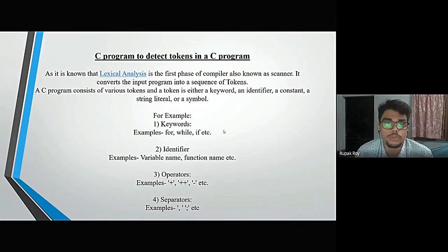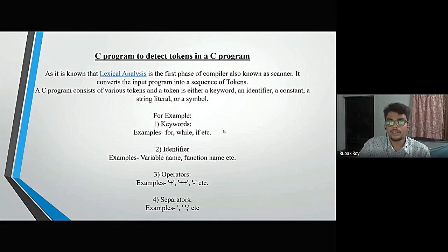Coming to a C program to detect tokens: a C program consists of various tokens. A token is either a keyword, identifier, constant, symbol, or string literal. For example, keywords are like for, while, if. Identifiers are variable names or function names. Operators include increment, addition, and subtraction. Separators include comma or semicolon.